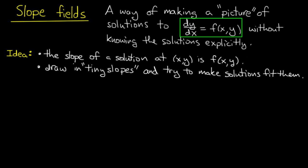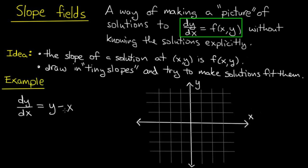And we try to make the solutions fit with all those tiny tangent lines. Now this is vague, so let me do an example to show you how it works. So we start off with dy dx equals y minus x. That'll be our example.